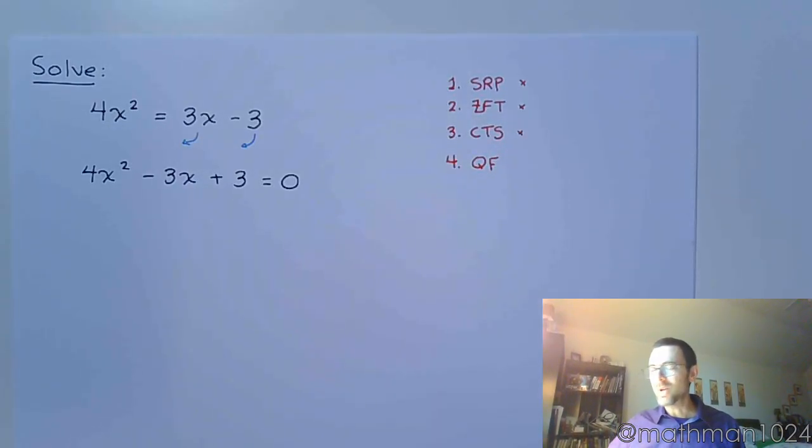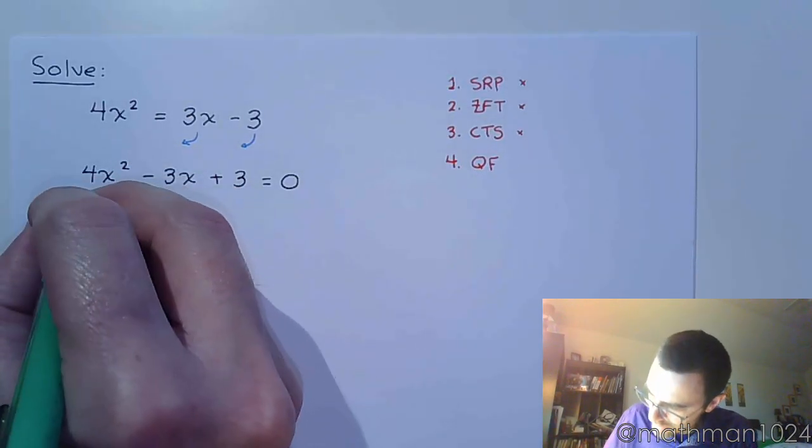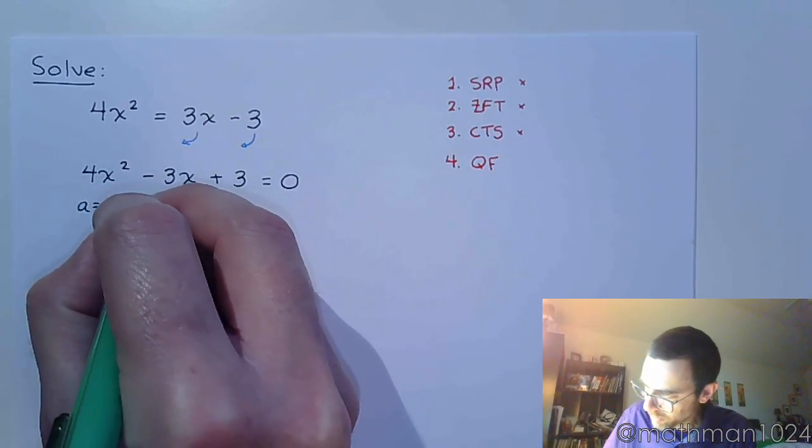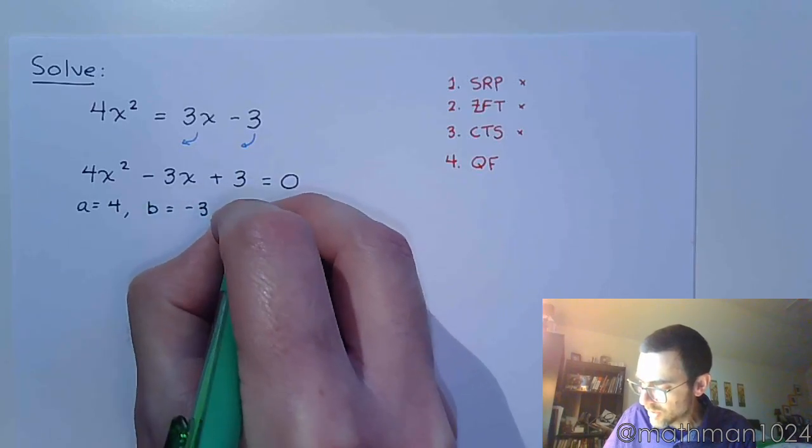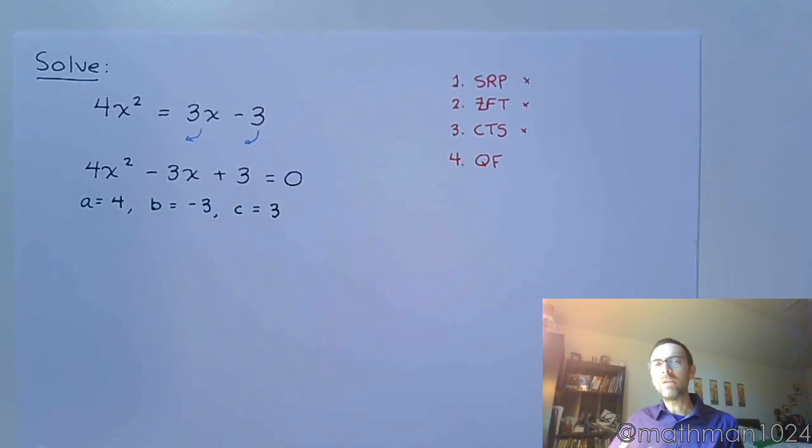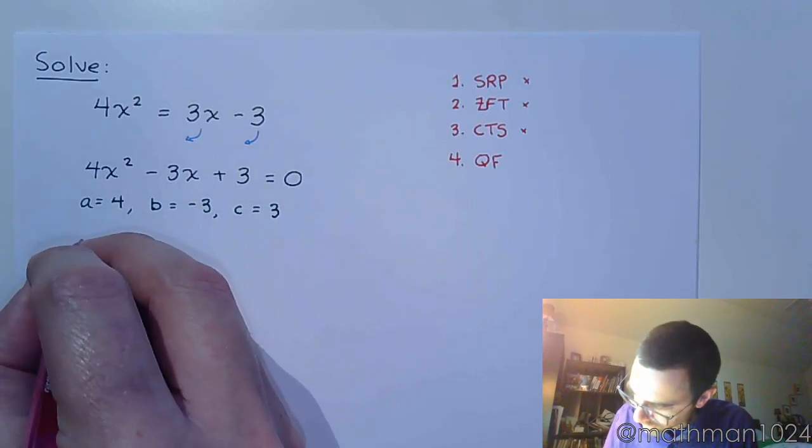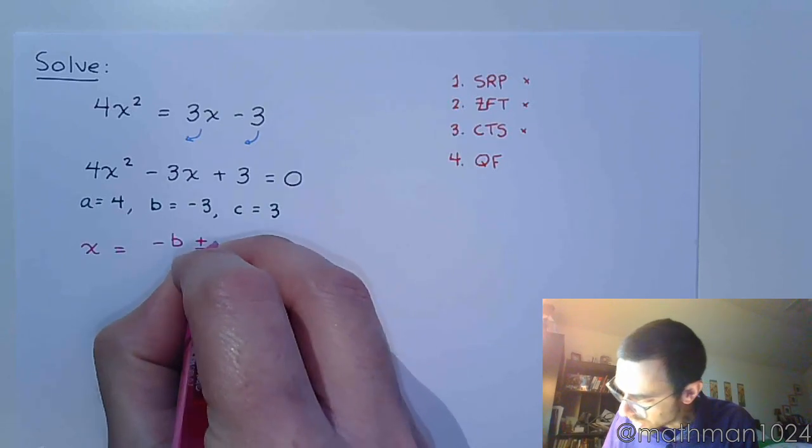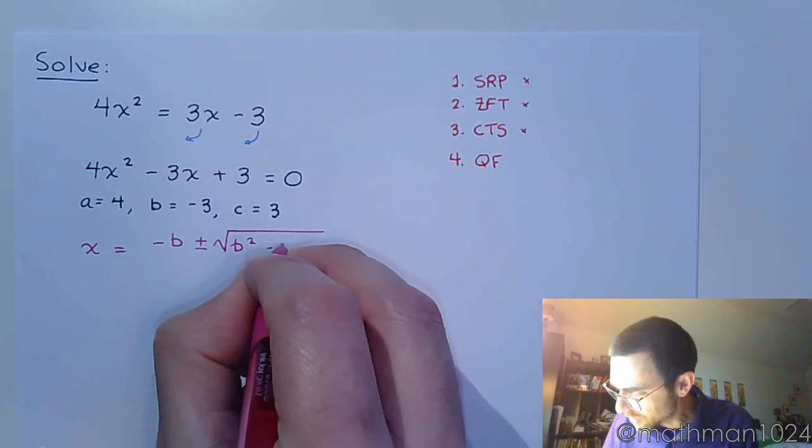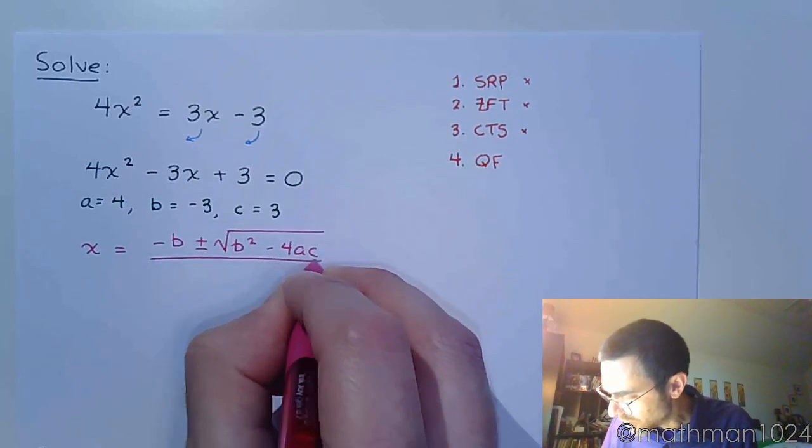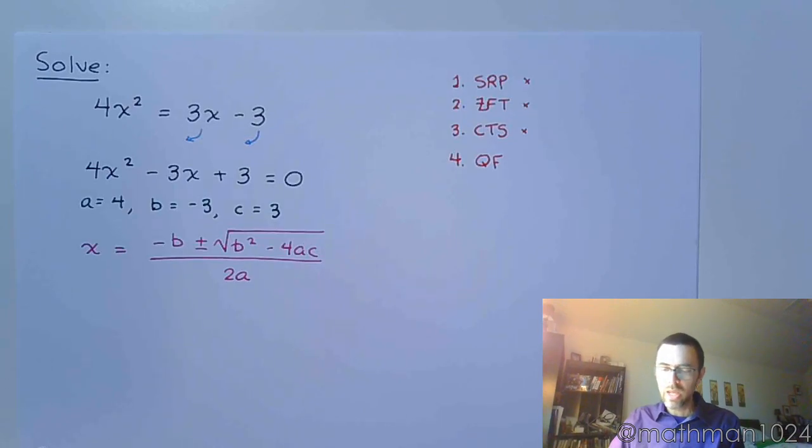So the quadratic formula requires us to identify the A, B, and C. And we're going to take those guys and plug them into our formula. So let's do that. And our A is 4, B is negative 3, and C is positive 3. We can't identify A, B, and C until everything is on the same side of the equation and 0 is on the other side. All right, so my quadratic formula. If only there were a song. X equals negative B plus or minus the square root of B squared minus 4AC all over 2A. Just like that. Now we plug in.